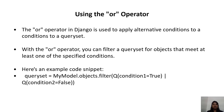Using the OR operator: The OR operator in Django is used to apply alternative conditions to a query set. With the OR operator, you can filter a query set for objects that meet at least one of the specified conditions. Here is an example code snippet: query_set = MyModel.objects.filter(Q(condition1=True) | Q(condition2=False)).